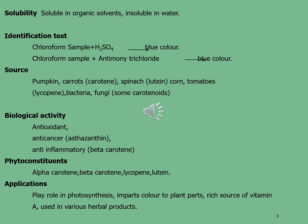Carotenoids are soluble in organic solvents and insoluble in water. For identification tests of carotenoids, two tests are performed. In the first test, the sample is taken in chloroform and then concentrated sulfuric acid is added along the side walls of the test tube; a blue color confirms carotenoids. In the second test, the sample is taken in chloroform and antimony trichloride is added, which also gives a blue color indicating the presence of carotenoids.